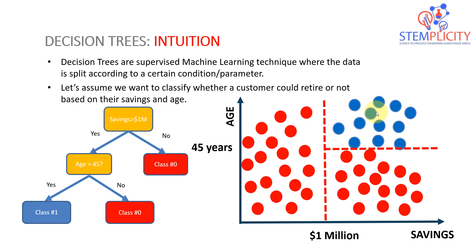That's decision trees in a nutshell. We do this on a daily basis — for example, deciding whether to go out on a weekend: is the weather good? Do I have money? Are there people I like going with? Based on all these collective decisions you decide to go out or not — class zero or class one. That's how decision trees work.